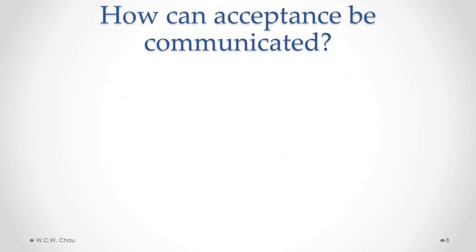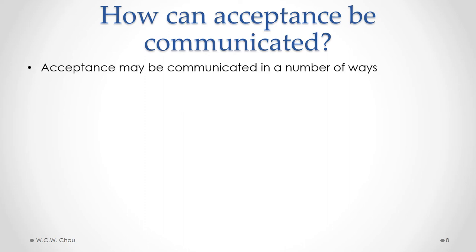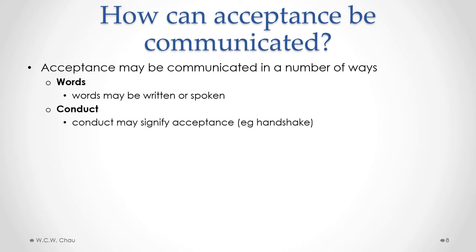How can acceptance be communicated? Acceptance may be communicated in a number of different ways. The most obvious one is in words, where words are either spoken verbally by one person to another signifying acceptance, or words are put into writing and that written document is sent from one person to the other. Another way of signifying acceptance is by conduct — by the way you act. Some very obvious conduct may signify acceptance, such as a handshake between two people.